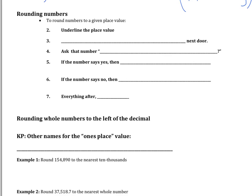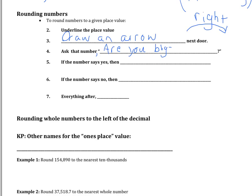The lyrics go like this. Underline the place value. Next, draw an arrow next door — we're always going to draw the arrow to the right. Ask that number — and we should have a comma here after 'number' — we're going to ask that number: 'Are you bigger than four?' Bigger than four.